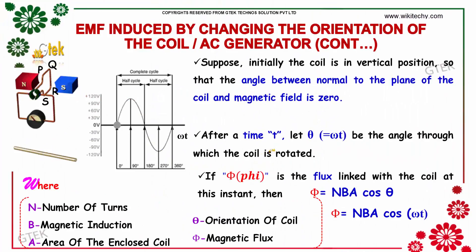Suppose initially the coil is in the vertical position, so the angle between the normal to the plane of the coil and magnetic field is zero. After a time T, let theta be the angle through which the coil is rotated. If phi is the flux linked with the coil at this instant, then the equation will become phi equals NBA cos theta. Replacing theta with omega t, you will be getting phi equals NBA cos omega t.